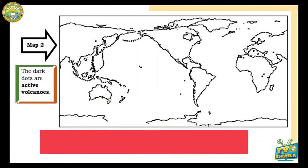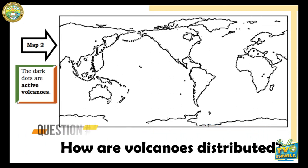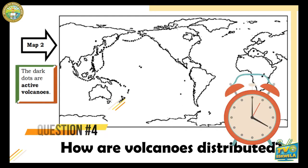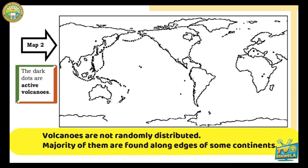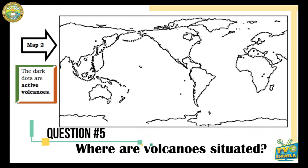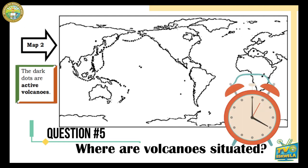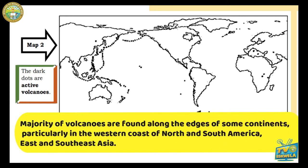Here is Map 2, the Earth's major volcanoes on page 8 of your module. The dark dots are the active volcanoes. How are volcanoes distributed? Volcanoes are not randomly distributed — the majority of them are found along the edges of some continents, particularly in the western coast of North and South America, and East and Southeast Asia.